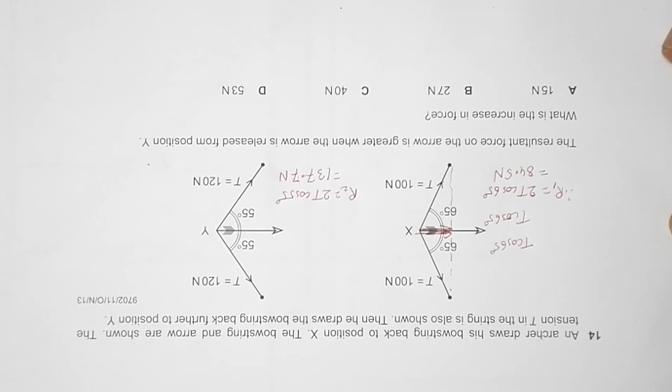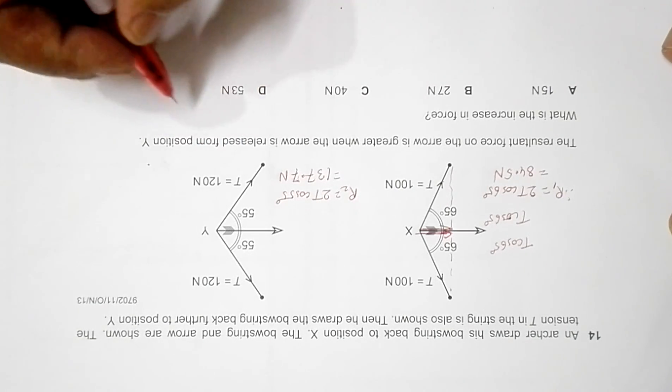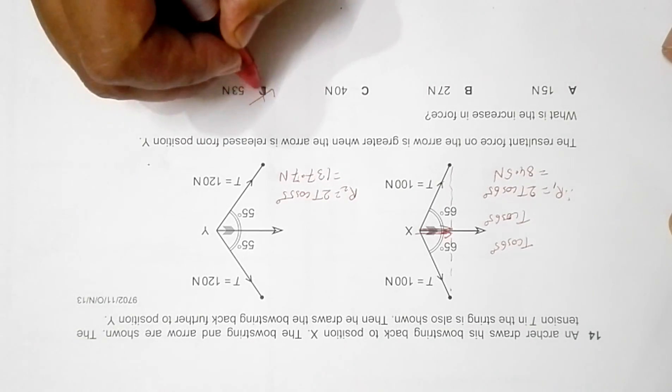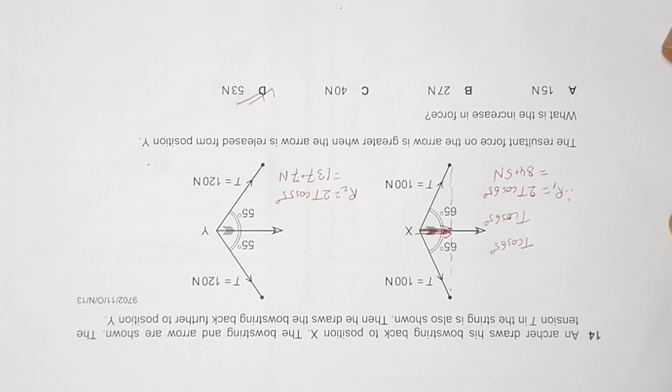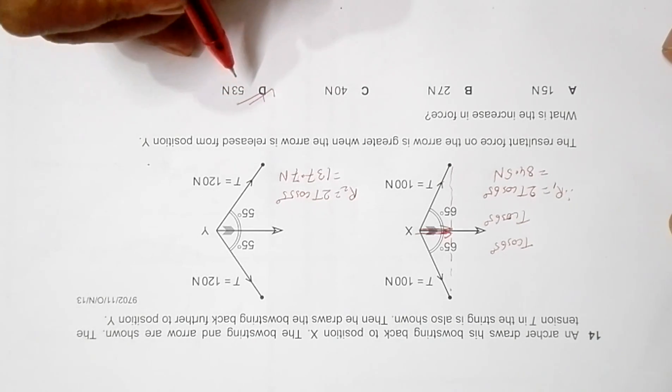Now the difference or increase will be given by 137.7 minus 84.5, so the value is equal to 53.2. The choice that is similar to this is 53 Newton, which should be the correct answer.